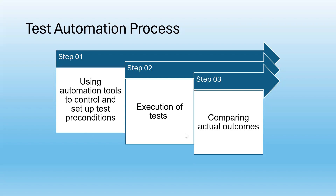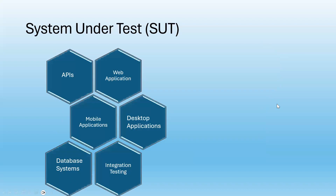Let's learn about system under test. What is the system under test? It is the target system or application being tested. Different types of systems — such as web applications, desktop applications, mobile applications, APIs, and database systems — are available as a system under test.